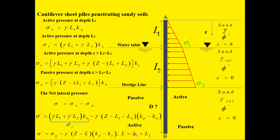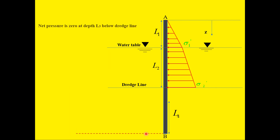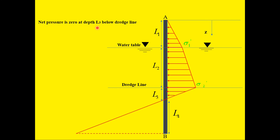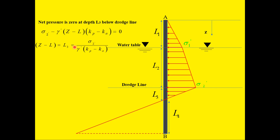The net pressure will be zero at depth L3 below the dredge line. Setting sigma 2 minus gamma_prime × (Z − L) × (Kp − Ka) equal to zero, we solve for Z minus L, which gives L3 equals sigma 2 prime divided by (gamma_prime × (Kp − Ka)). The term 1 over (gamma_prime × (Kp − Ka)) represents the slope of the net pressure line.